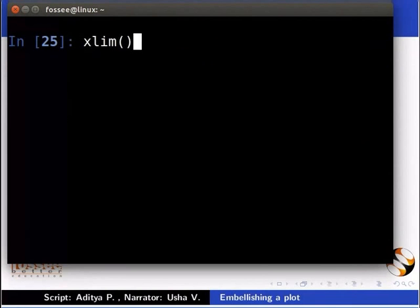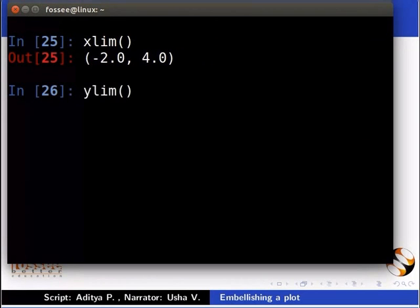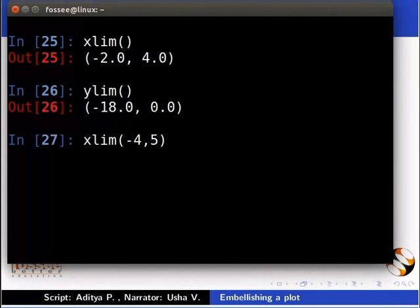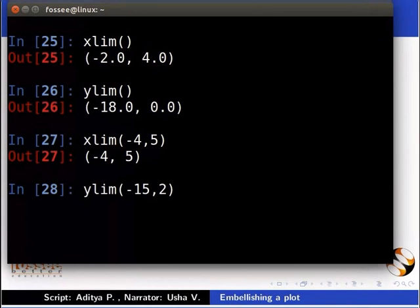Next, type xlim brackets. xlim function returns the current x-axis limits. Then type ylim brackets. ylim function returns the current y-axis limits. Set the limits of x-axis from minus 4 to 5 by typing xlim inside the brackets minus 4 comma 5. Similarly, set the limits of y-axis in a similar manner. Type ylim inside the brackets minus 15 comma 2.